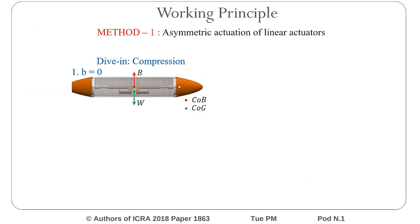There are two methods of operating the system. One is by asymmetric activation of the linear actuators, and the other is by symmetric activation of both the actuators. In the first method, the linear actuator can be individually controlled to achieve different residual buoyancy levels.